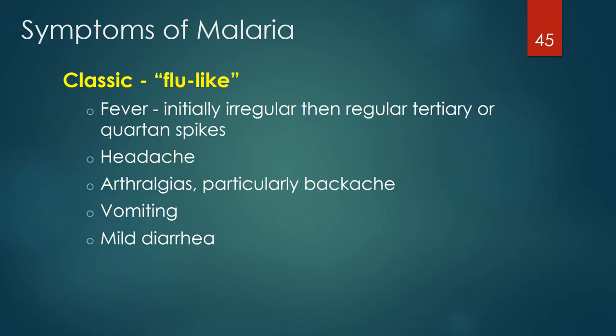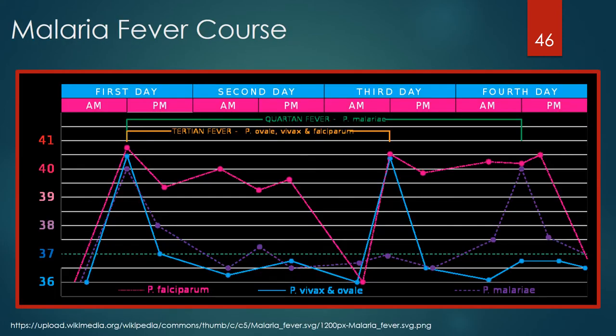Malaria commonly presents with flu-like symptoms of fever, headache, arthralgias (particularly backache), vomiting, and mild diarrhea. Fever spikes are initially irregular but then transition to spike in a regular tertiary or quartan pattern. Diarrhea can confuse clinicians who may look for a gastrointestinal cause for the illness versus malaria. This graph demonstrates the classic tertiary and quartan fever spikes of various malaria organisms, correlating with the release of merozoites from schizonts.